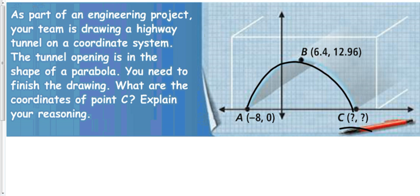We can use what we know about parabolas to figure out the coordinates of this point. First of all, B is at the highest point, so we know that that is the vertex, which means that that line right down there cuts the parabola exactly in half because it is the axis of symmetry. So because of that, I know this distance right here is 6.4, and then this distance right here is another 8.